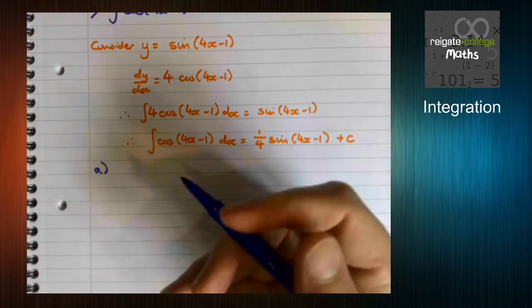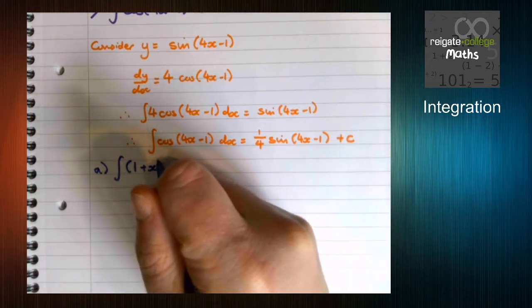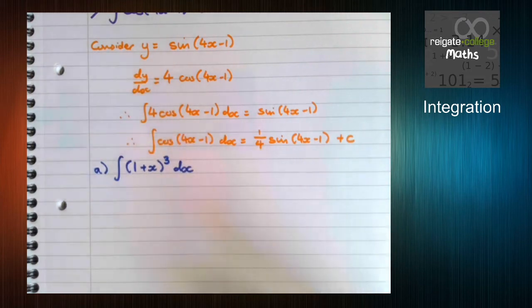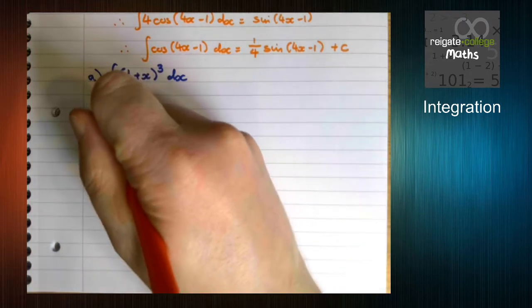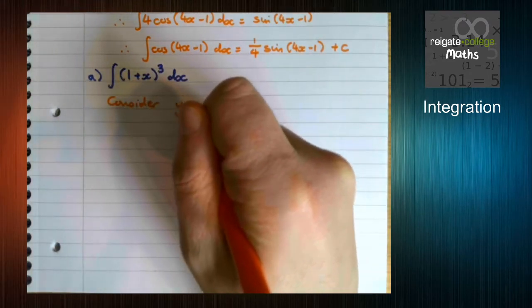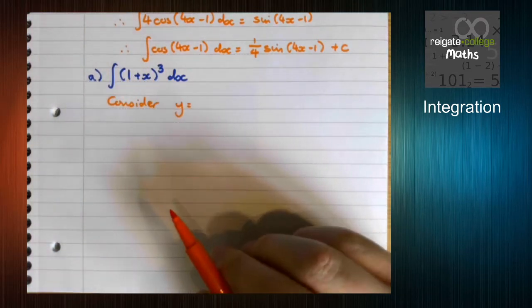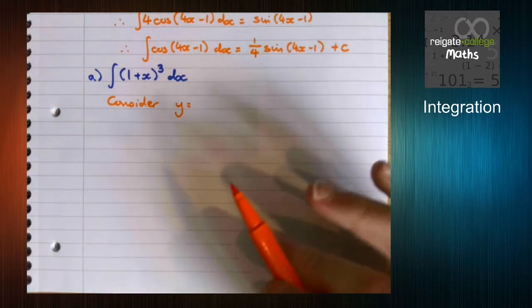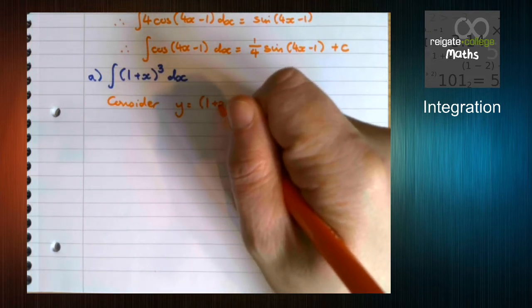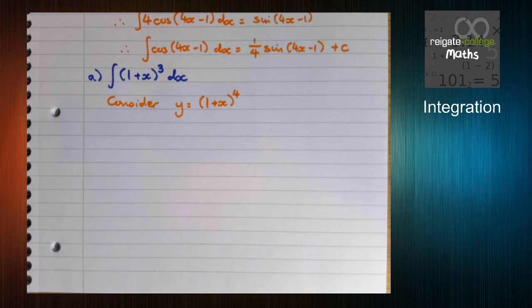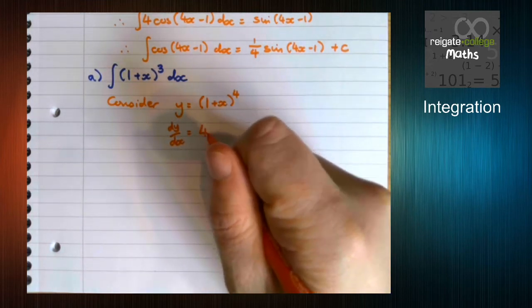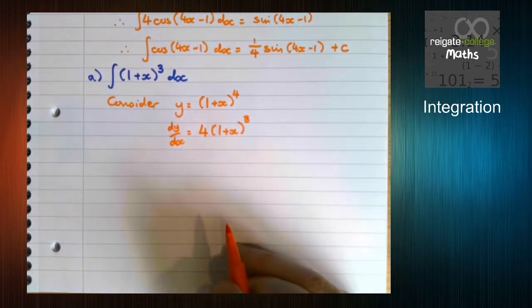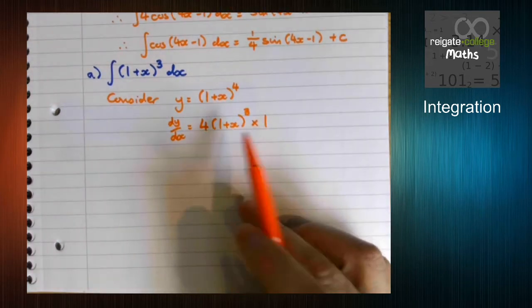We've got integrate 1 plus x cubed. The longer method, let's consider what could differentiate to give us something where this is involved. Now because of what we did with the chain rule and about brackets differentiating, we know that brackets on the whole follow similar rules to our normal polynomial differentiation. So we know that when we differentiate a bracket, we multiply by the power, reduce the power by 1, then times by the derivative of the bracket, which in this case the bracket differentiates to 1.